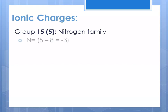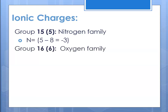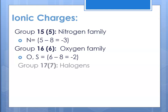If we're talking about group fifteen, the nitrogen family or five A, its charge would be five minus eight, so negative three. For the oxygen family in group sixteen or six A, that would be six minus eight, which is negative two. So oxygen and sulfur — everyone in that column — would form a negative two. And in group seventeen, again the halogens, seven minus eight is negative one, so the charge of everyone in that column would be negative one.